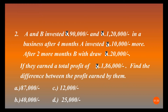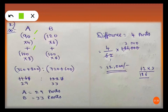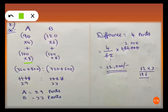A invested 90,000 rupees for 4 months: 90 into 4. After 4 months he added 10,000, giving 1 lakh rupees for the remaining 8 months: 100 into 8. B invested 1 lakh 20,000 rupees; after 6 months he withdrew 20,000, so 120 minus 20 gives 100 — his 1 lakh rupee investment runs for the remaining 6 months: 100 into 6.